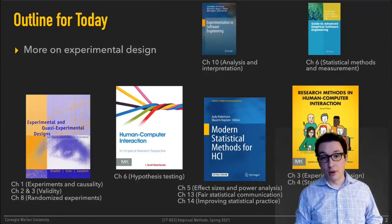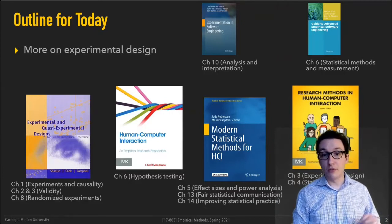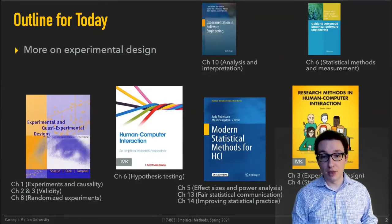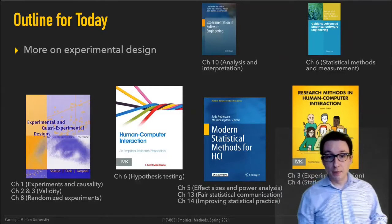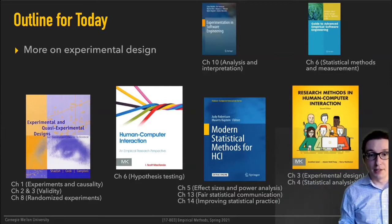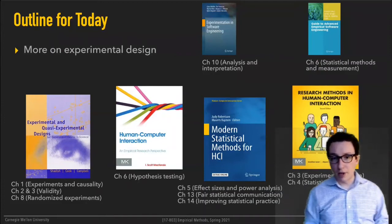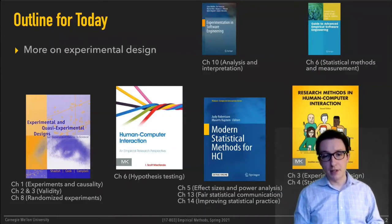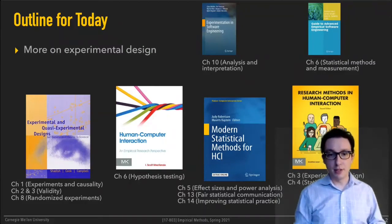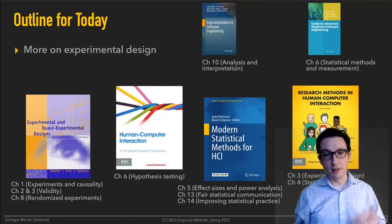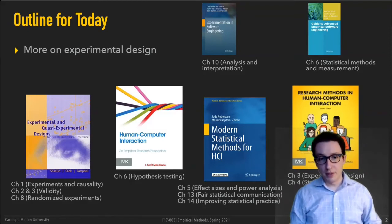One is the McKenzie book. Chapter six there in particular is especially relevant for today's lecture and the discussion I've been having for the last two or three lectures on hypothesis testing. Then this book here — I love this — there are a couple of really good chapters on designing experiments and statistical analysis of the data you collect. And finally, there's this Modern Statistical Methods for HCI book that I just discovered, with very readable material about how to do statistics rigorously and how to avoid common statistical pitfalls.